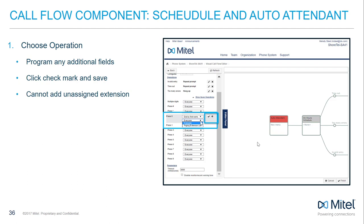TakeMessage works like GoToExtension, as it delivers calls directly to the extension without announcing it, but rather than ringing the user's phone, it is delivered directly to their mailbox. TakeMessage by first or last name works like the dial by first or last name, except in this case it takes a message rather than delivering the call to the user.